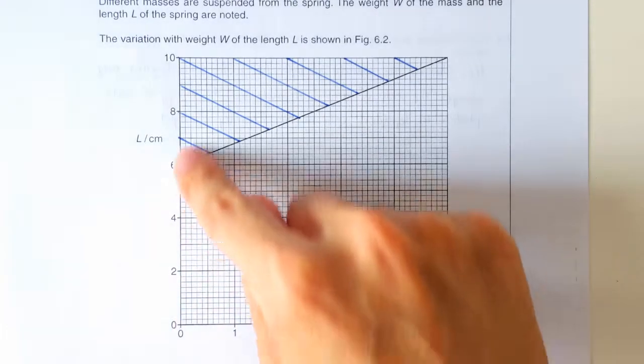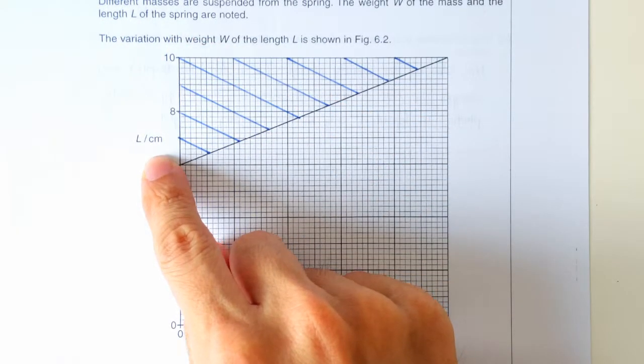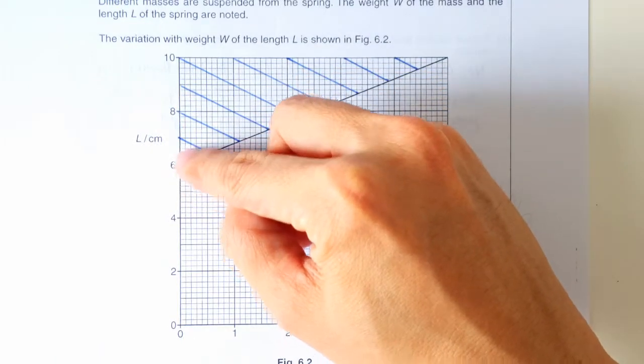Second reason, this is not an extension. This is the length of the spring. The natural length of the spring is 6cm. So the extension only begins from 6cm.